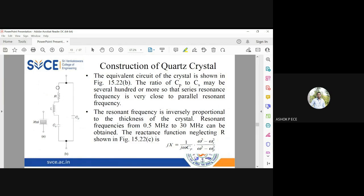The crystal can be represented by this equivalent circuit. So you have an RLC in series and you have a capacitance in parallel. See, the crystal is between two metallic plates - that will contribute to the capacitance cp.